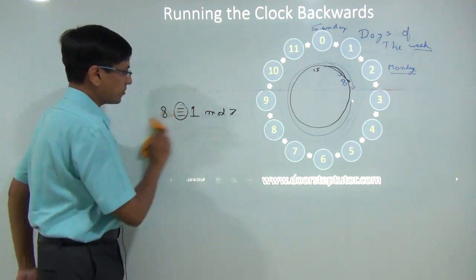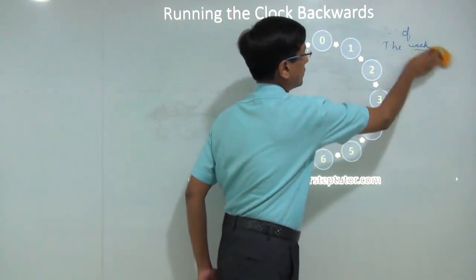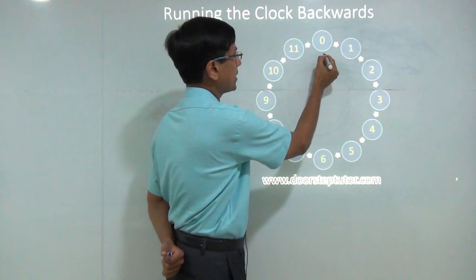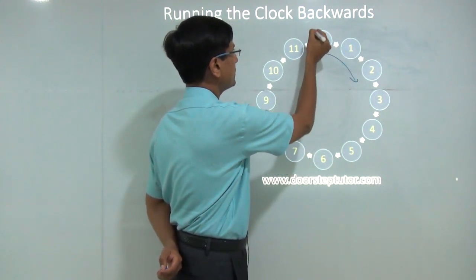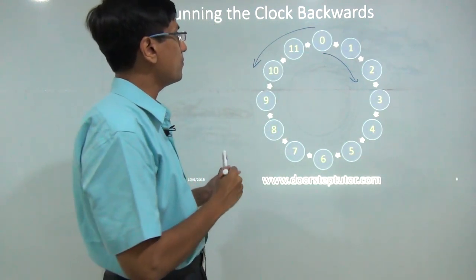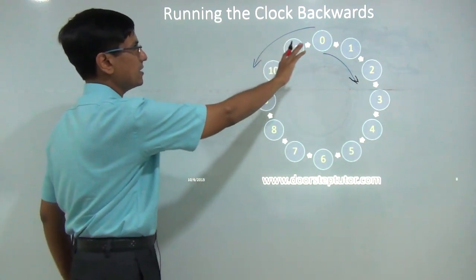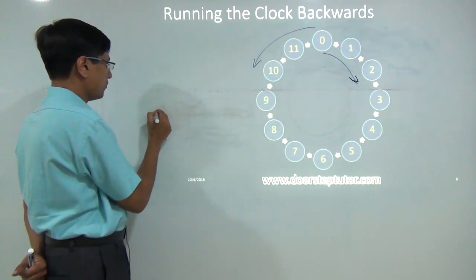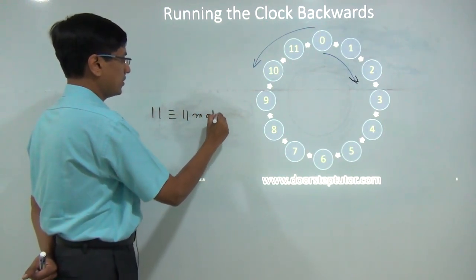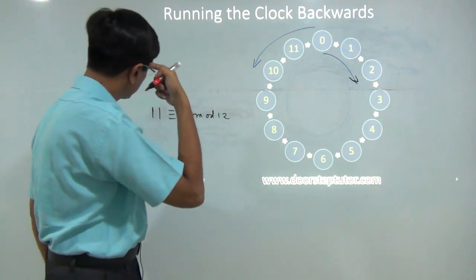One important concept in congruence, especially in aptitude problems, is the concept of going forward and going backwards. When I move forward, for example in the clock, 11 is congruent to 11 mod 12, because from 12, if I go forward 11 times, I come to 11. This says that 11 when divided by 12 gives a remainder of 11.